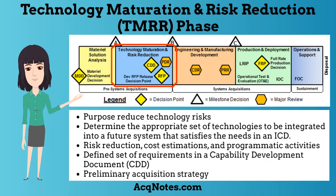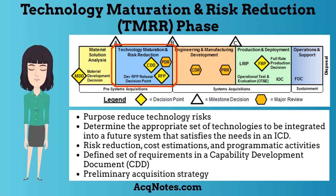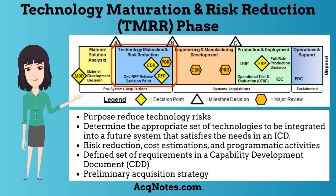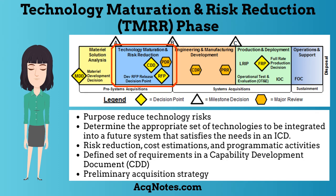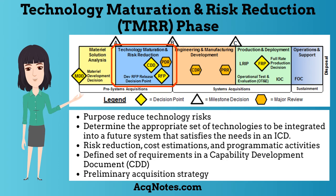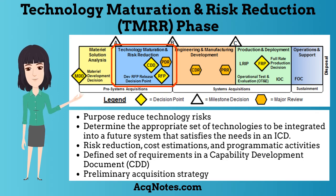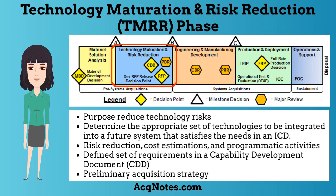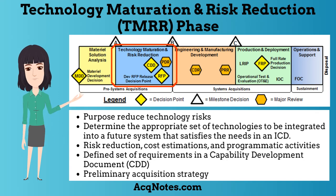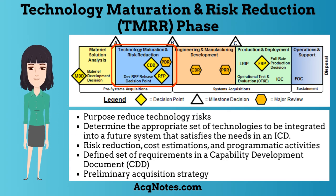The second phase is the technology maturation and risk reduction phase, or what I call the TMRR phase. The purpose of the TMRR phase is to reduce technology risks and to determine the appropriate set of technologies to be integrated into a future system that satisfies the needs in an initial capabilities document. This phase will consist of risk reduction, cost estimations, and programmatic activities. The goal of this phase is to reduce the technology risk to an acceptable level, have a defined set of requirements in a capability development document, and a preliminary acquisition strategy to start an official program in the next phase.